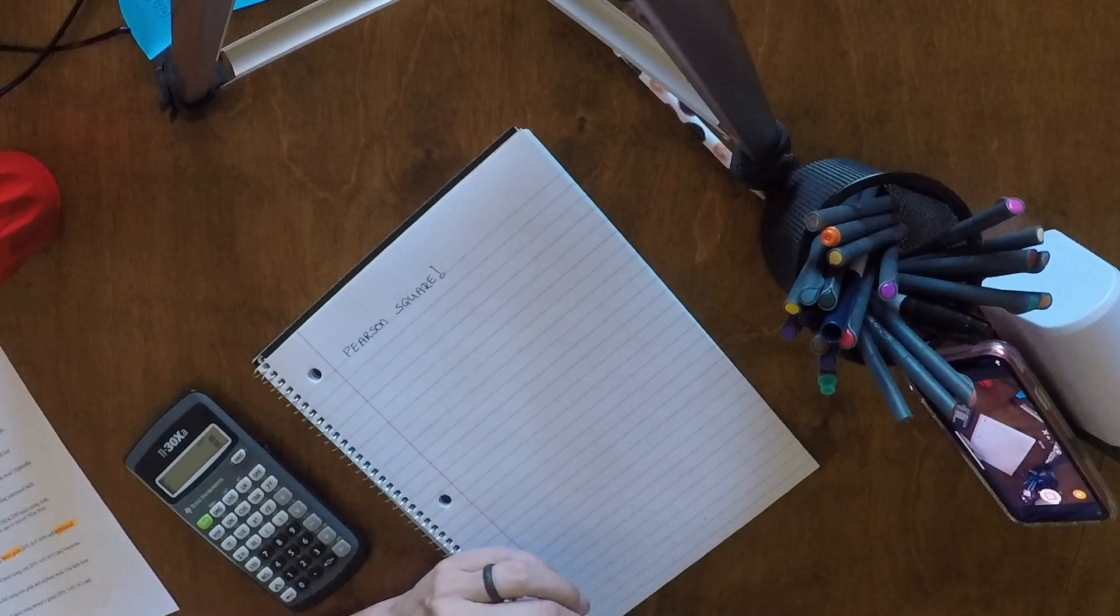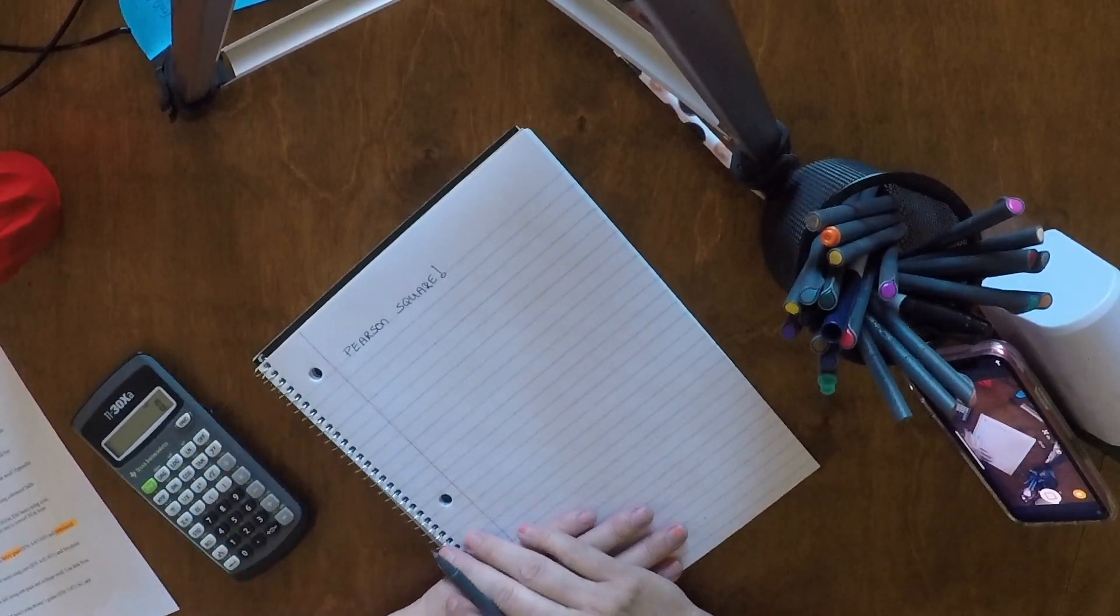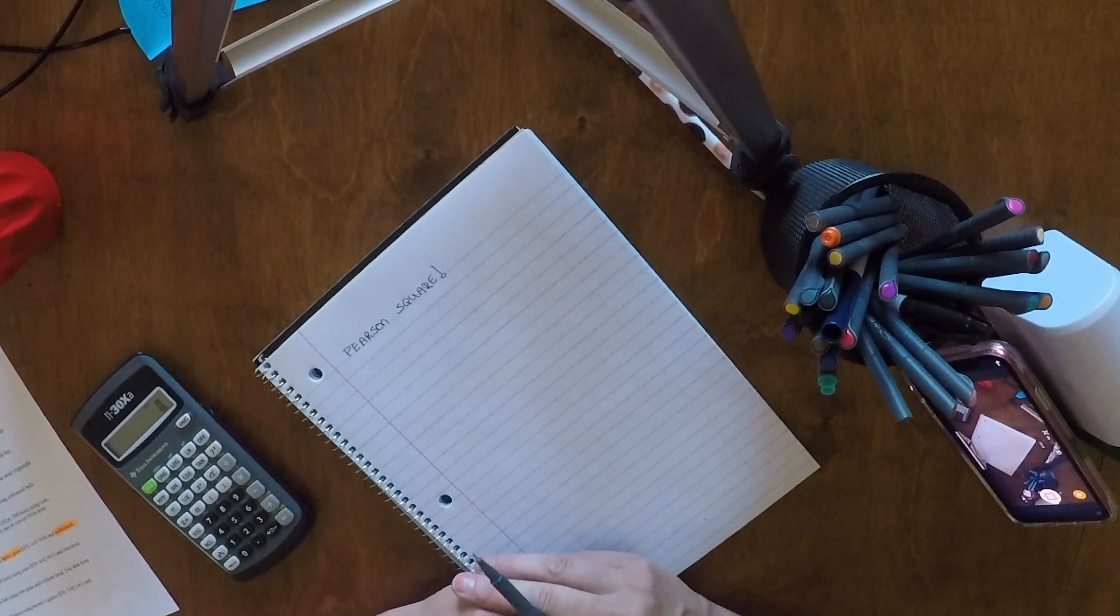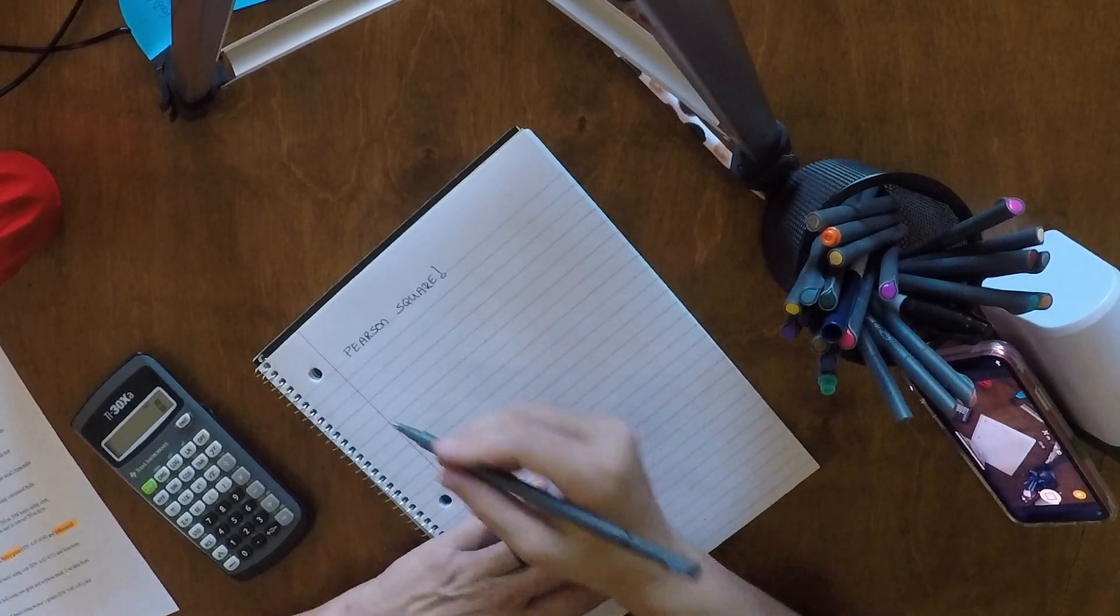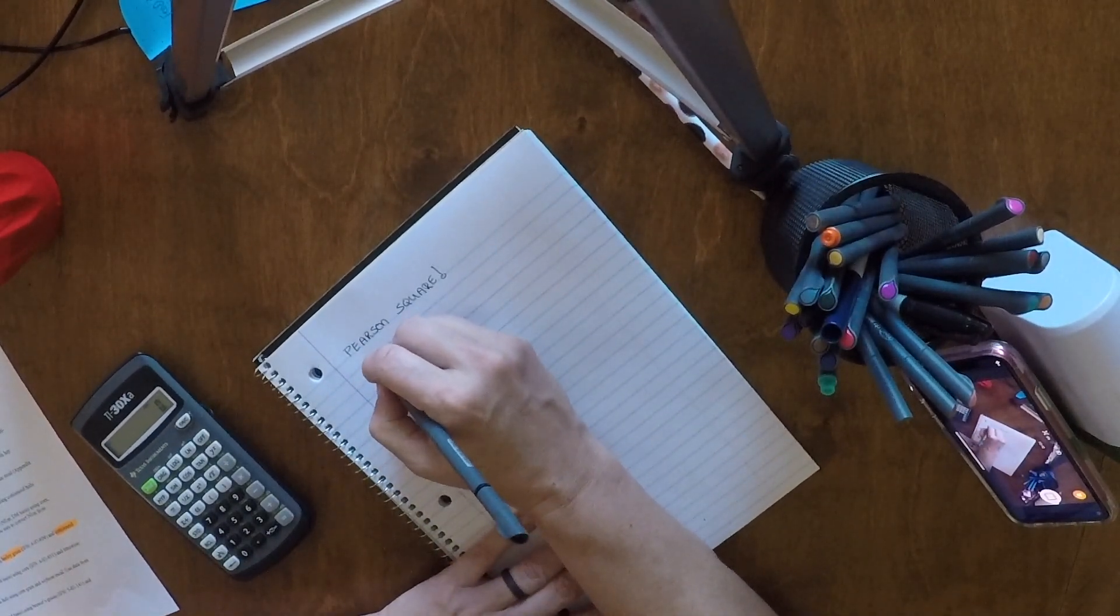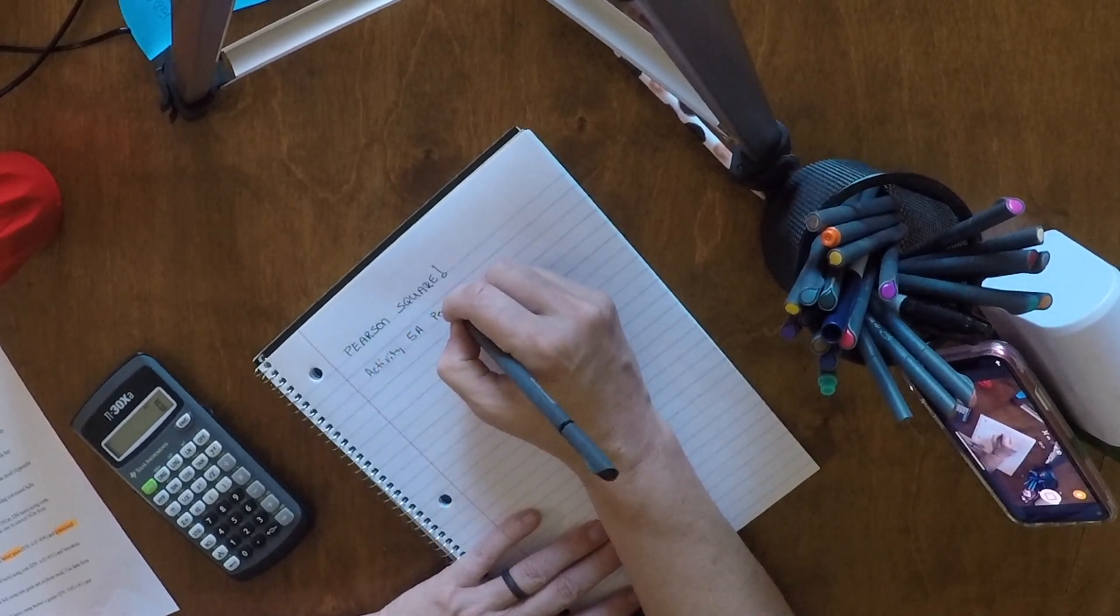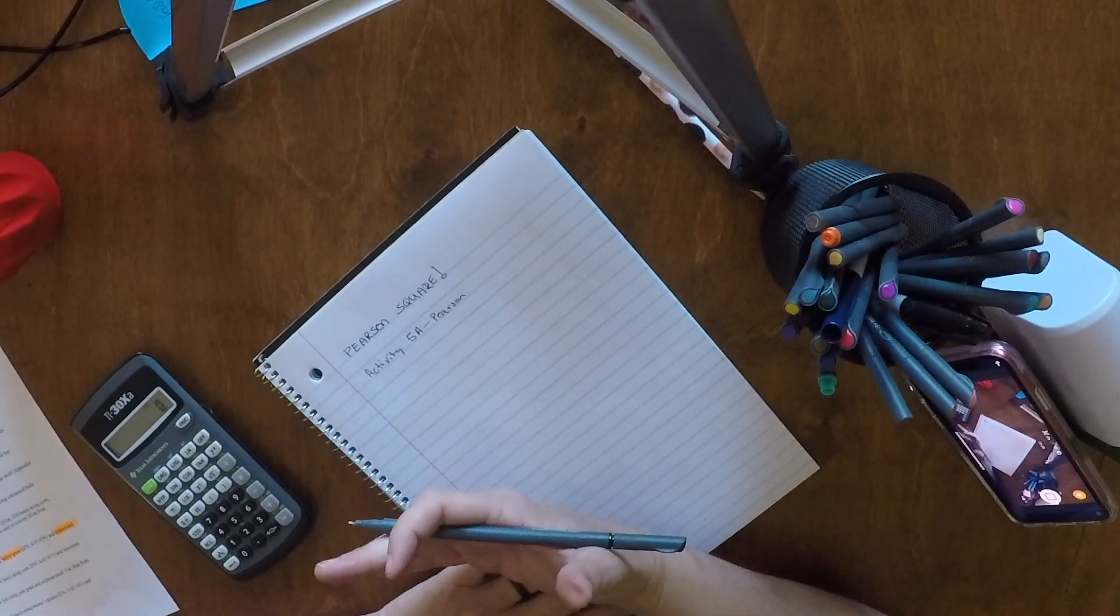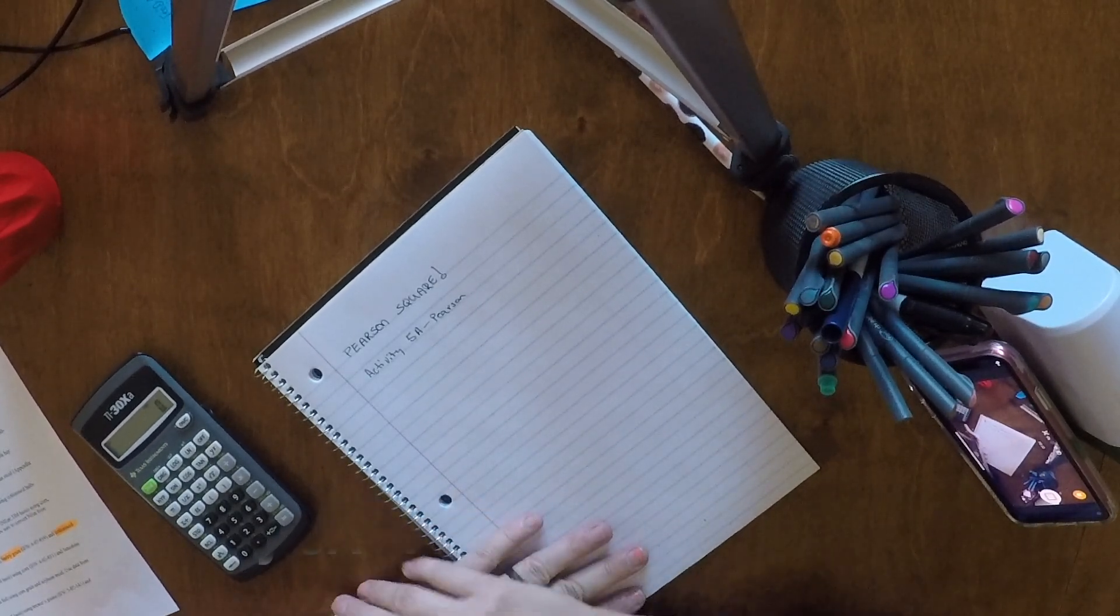Alright, time to start balancing our first rations. We're going to work with the Pearson Square. If you pull up on Blackboard Learn and Module 5, you'll find activity 5A, the Pearson Square. Those are the problems you're going to need to solve, and I truly believe the best way to learn the Pearson Square is to just jump in and do one.